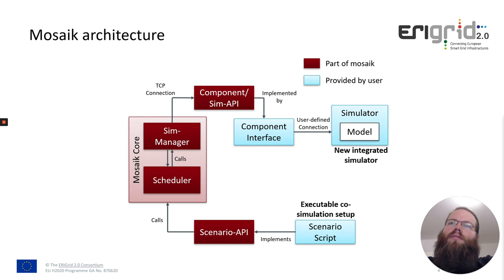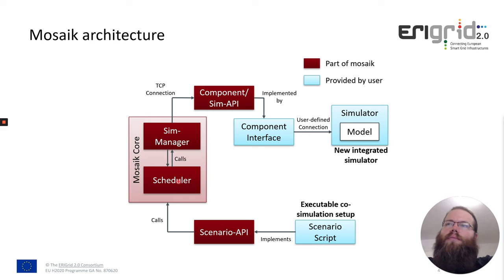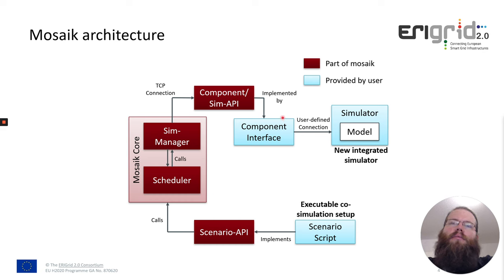How does Mosaic work, and how does the architecture look when we want to integrate models and build a scenario? On the left hand side you can see the Mosaic core, which has a simulation manager and a scheduler — the two main parts. Especially for the simulation manager, the component API is the important part because this allows coupling simulation components. The red part is part of Mosaic and the light blue part has to be provided by the user. If a simulation component should be coupled with Mosaic, then this component API has to be implemented by the user.